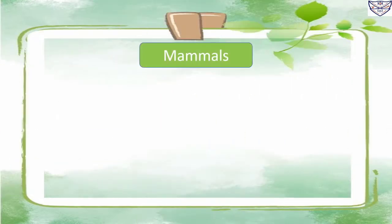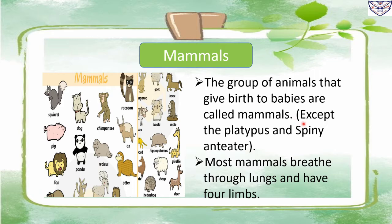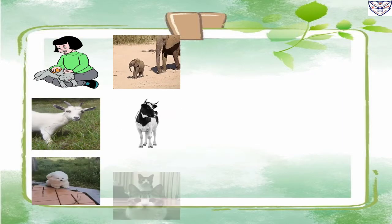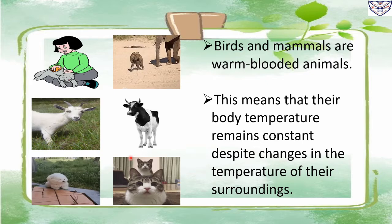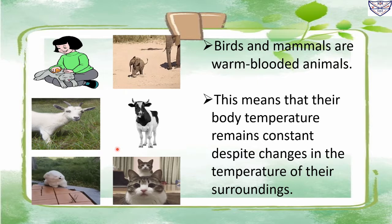The group of animals that give birth to babies are called mammals, except for the platypus and spiny anteater. Their body is covered with hair and the mother nurses its young ones. Most mammals breathe through lungs and have four limbs. Birds and mammals are warm-blooded animals.